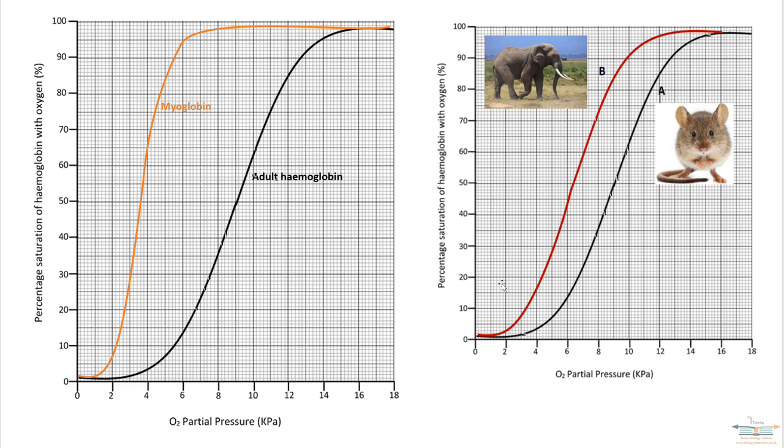In terms of its oxygen dissociation curve, if we look at the graph on the left, we've got the adult haemoglobin line for comparison. Now, the myoglobin curve is almost vertical, so that tells you it's got a very, very high affinity for oxygen. In fact, it becomes fully saturated at about 8 kilopascals of oxygen.